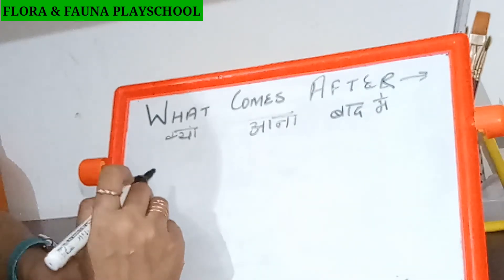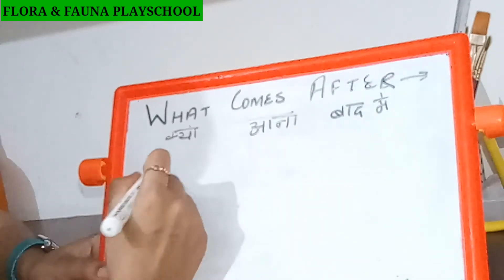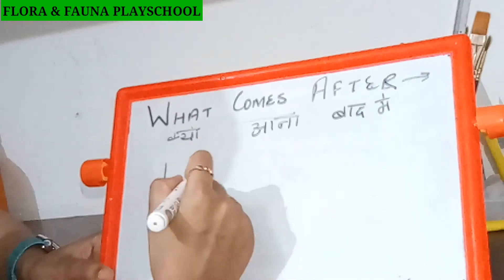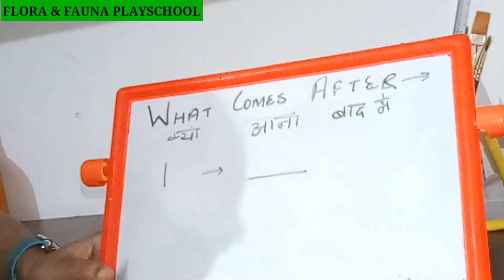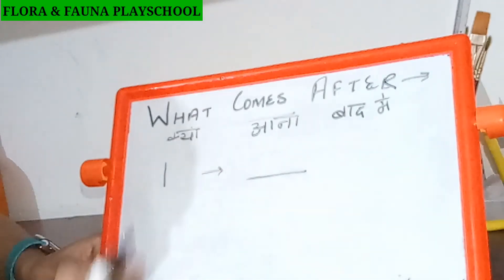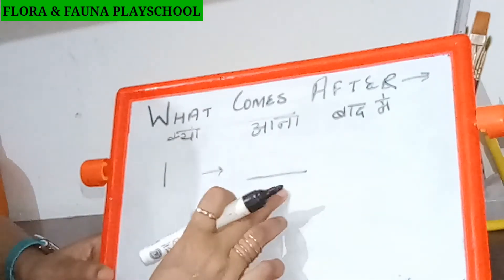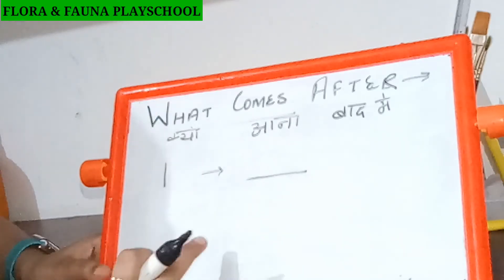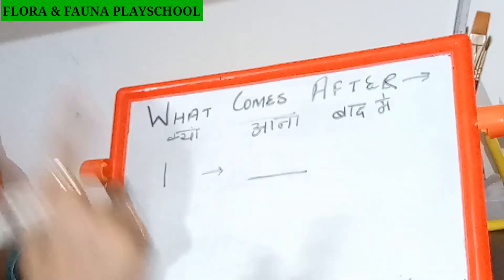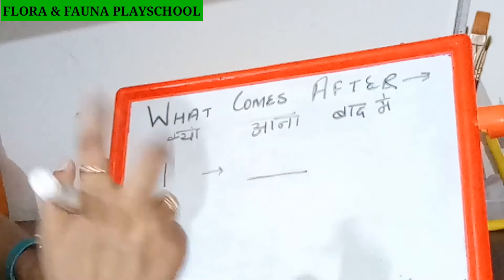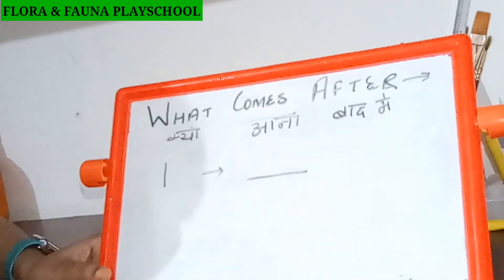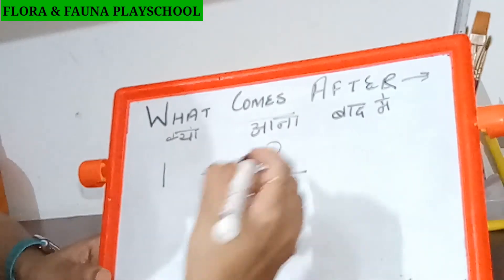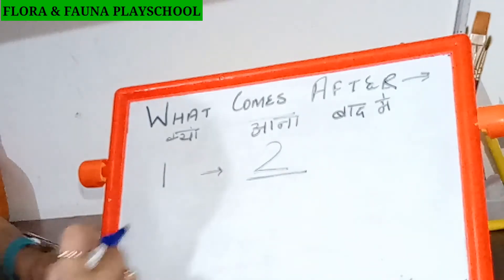For example, one. One ke baad kya aata hai? What comes after one? Bataayye. Count kariye. One. Two. Yes. Two. Right.